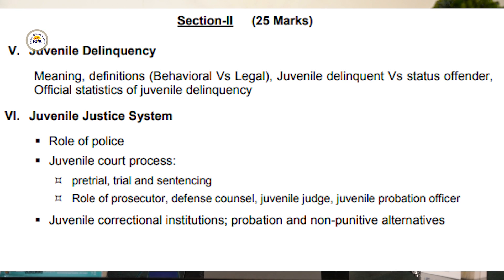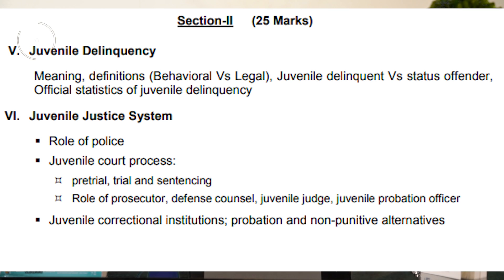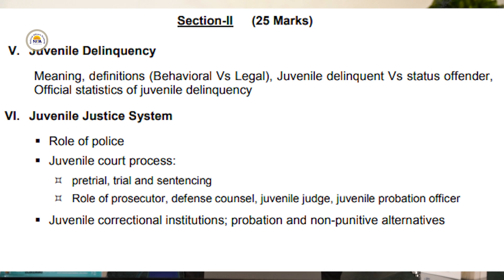In the juvenile justice system, there are separate courts for children in developed cities. However, in other areas, additional charges are given to judges for juvenile courts. This section discusses what would be the role of police, judge, and the criminal justice system when dealing with juvenile offenders. It also covers the role of probation officers — how to send a juvenile on probation, and how to treat a child under 18 who is involved in criminal enterprise.